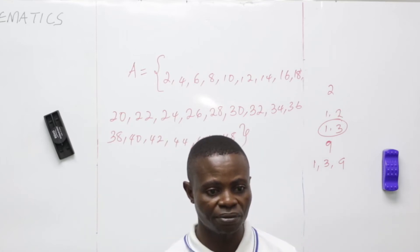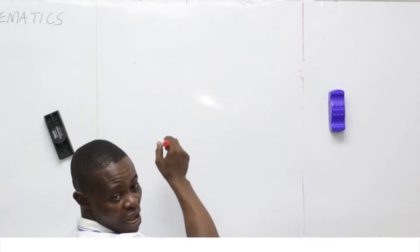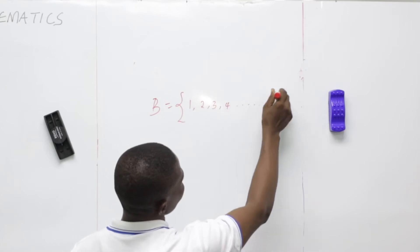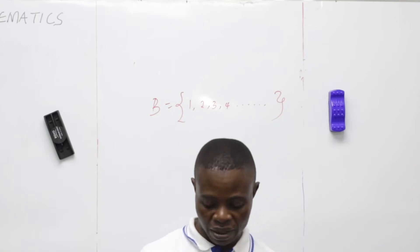Let us take a look at another one. These are the elements of set B — natural counting numbers. When we talk about natural counting numbers, we consider 1, 2, and so on. How do you know where to stop? It was not specified, so you have to be very careful. If B is natural, meaning 1, 2, 3, 4, dot dot dot — it's continuous. It has no limit to infinity. These are examples of natural counting numbers.